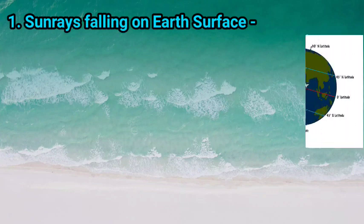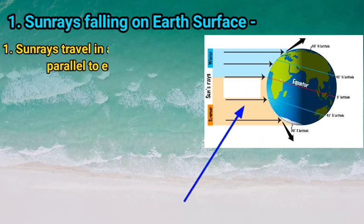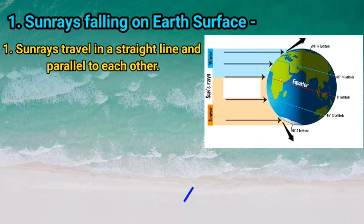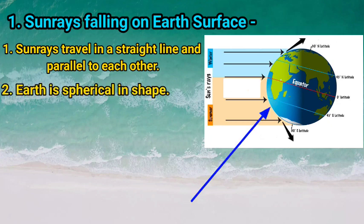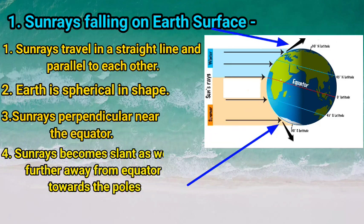First point: Sun rays falling on the Earth's surface. Sun rays travel in straight lines and are parallel to each other, but the Earth's surface is spherical in shape. Therefore, the rays of the Sun are not perpendicular to all parts of the Earth's surface. Sun rays are perpendicular near the equator, and they become more and more slanted as we move further away from the equator towards the north and south poles.